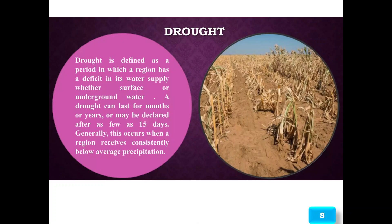Drought is defined as a period in which a region has a deficit in its water supply, whether surface or underground water. As shown in the picture, drought can last for months or years, or may be declared after as few as 15 days. Generally, this occurs when a region receives consistently below-average precipitation.